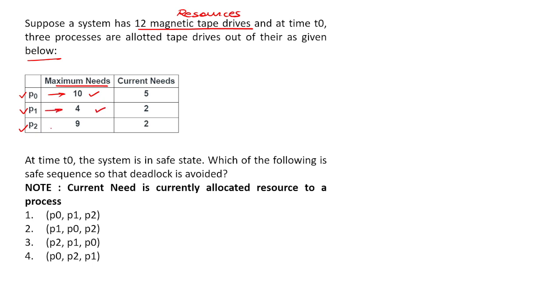And current needs - here they had given one note that current need is the currently allocated resources to a process. All these are the currently allocated resources.